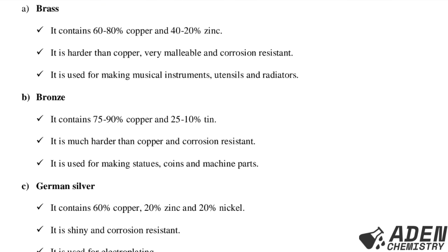The next alloy is bronze, which contains 75–90% copper and 25–10% tin. The properties of bronze: it is much harder than copper and also resistant to corrosion. The use of bronze alloy: it is used for making statues, coins, and also machine parts. Lastly, the third alloy of copper is German silver.